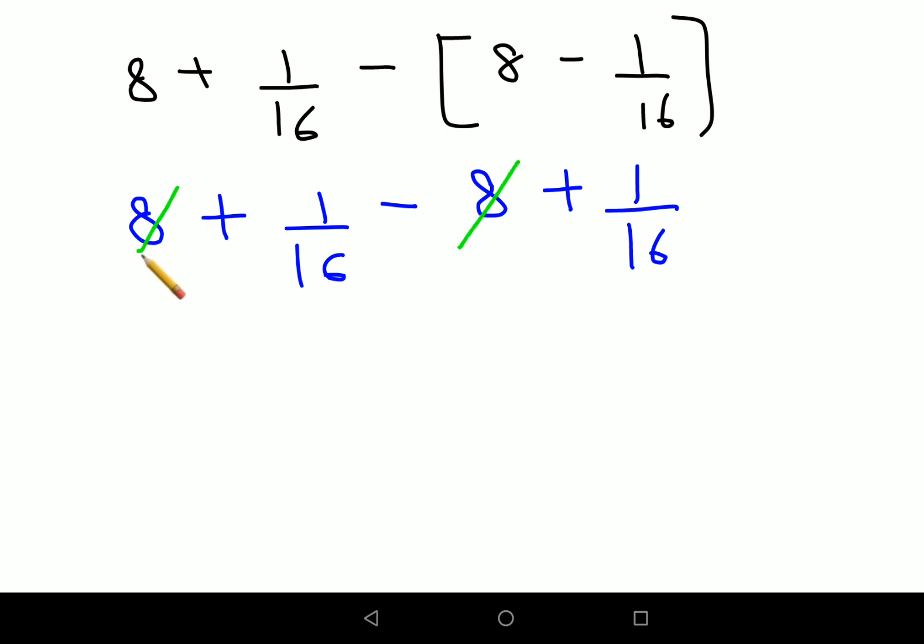Now you see things have become much more simple. Your 8s have cancelled and you're just left with 1/16 plus 1/16. Since the denominators are the same, I can add them, so I'll have 2/16. Both of these numbers are even, so you get 1/8.